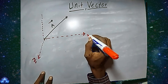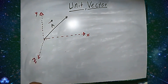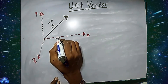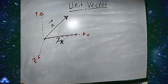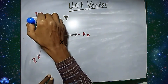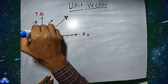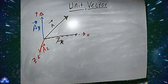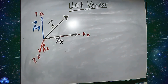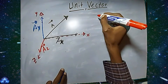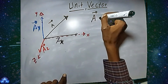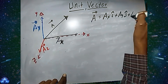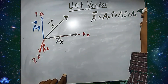Consider a vector A drawn from one point to another in a Cartesian coordinate system with x, y, and z axes. We have a component of vector A in the x-axis, which is Ax; a component Ay in the y-direction; and a component Az in the z-direction. Therefore, this vector A can be represented as A equals Ax times i-hat plus Ay times j-hat plus Az times k-hat. This is the representation of A in a coordinate system.